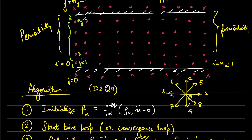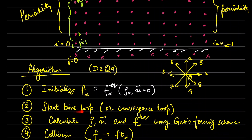Now the algorithm will go as follows. I will show you the code which will start with initialization of distributions F_alpha. I will initialize them as equilibrium distributions corresponding to some reference density and zero velocity. We then start the time loop or the convergence loop — I prefer the time loop because it is easy to code and as a beginner I think this is the easiest way.